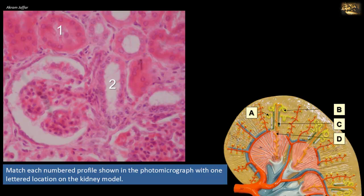Match each numbered profile shown in the photomicrograph with one lettered location on the kidney model. The photomicrograph shows a glomerulus, thus it represents part of the renal cortex, where we also expect to find proximal and distal convoluted tubules. The circular profile number one is a proximal convoluted tubule.